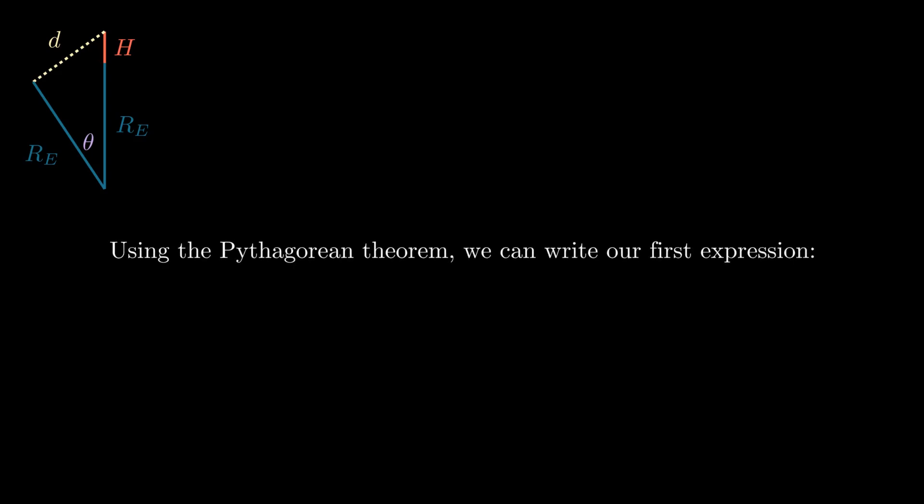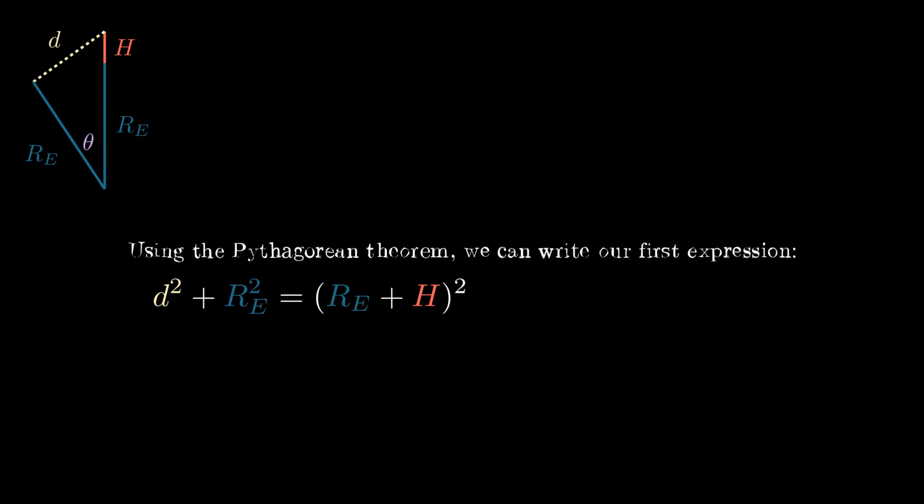Because this is a right triangle, we can use the pythagorean theorem to write our first expression. d squared plus RE squared is equal to the quantity RE plus h squared. Expanding the right hand side, this quantity is equal to RE squared plus h squared plus 2hRE.